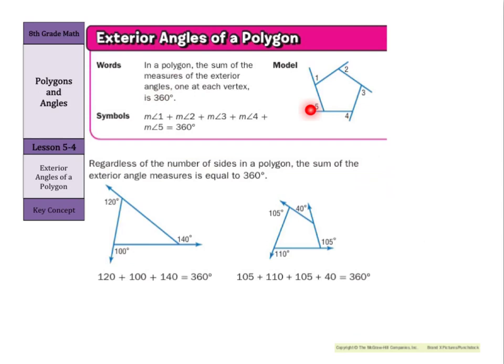That's true for a triangle. That's true for a quadrilateral. It's true for our 20-gons and whatever. 120 plus 100 plus 140 is 360. And 105, 40, 105, 110 is 360 degrees. So it's one of those that it's just kind of cool.